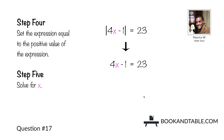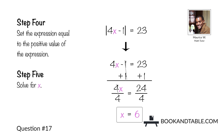Step four: set the expression equal to the positive value. Step five: solve for x. Add 1 to both sides, leaving us with 4x is equal to 24. Remove the coefficient 4 by dividing both sides by 4, giving the answer x is equal to 6.